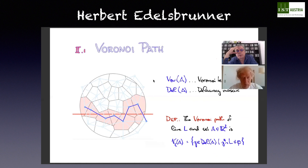Herbert Edelsbrunner: It's called the Voronoi path, where the square tiling of the plane is replaced by a Voronoi tessellation of the plane.